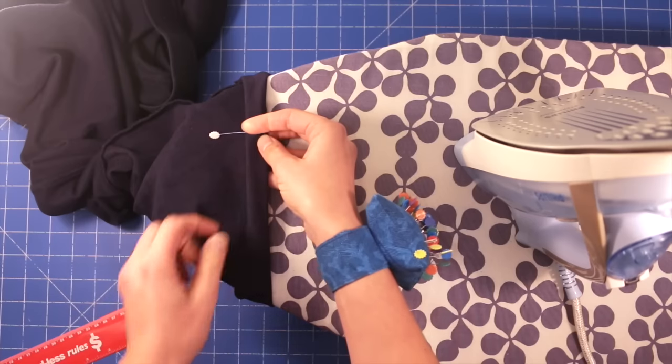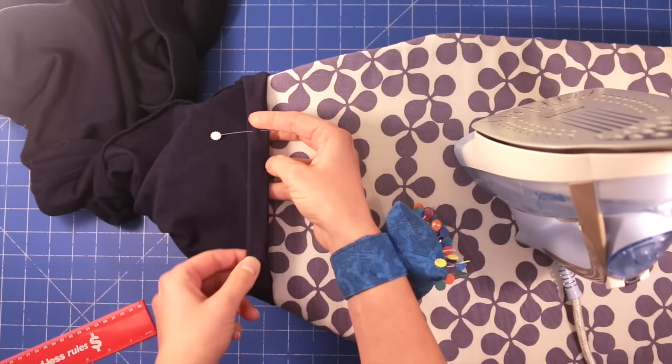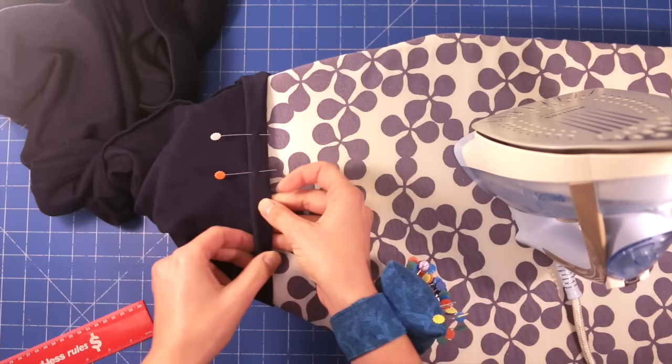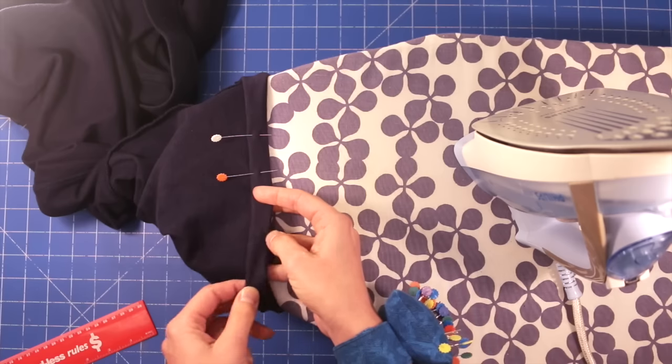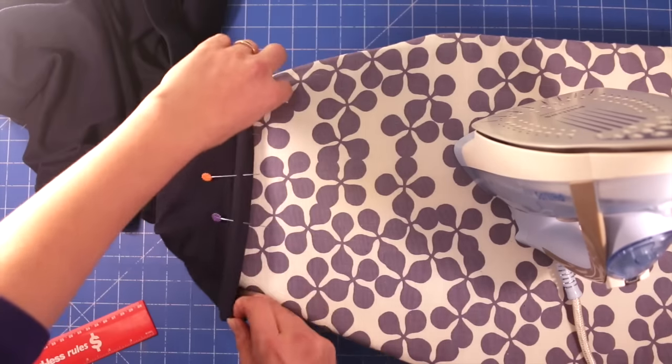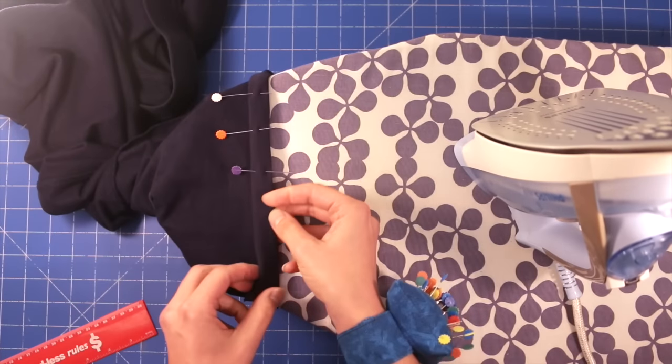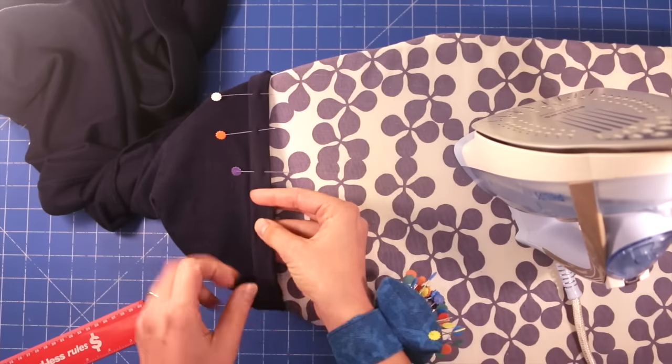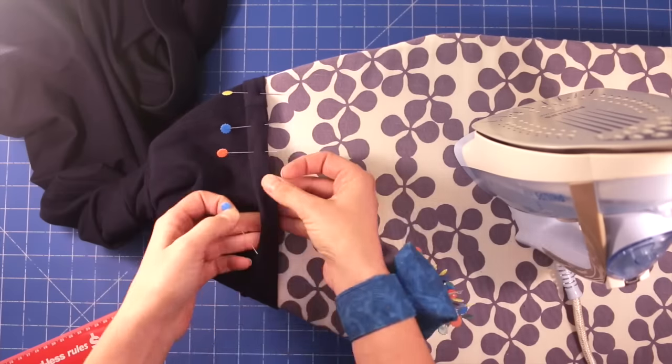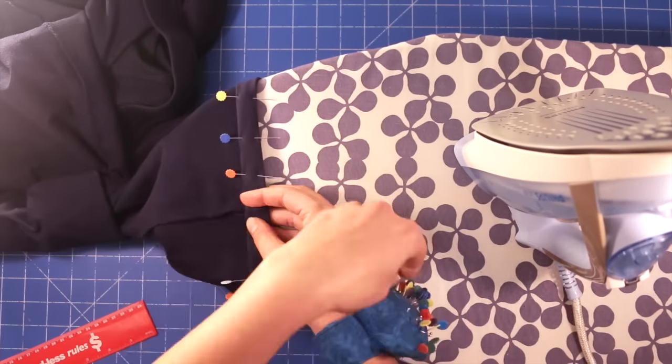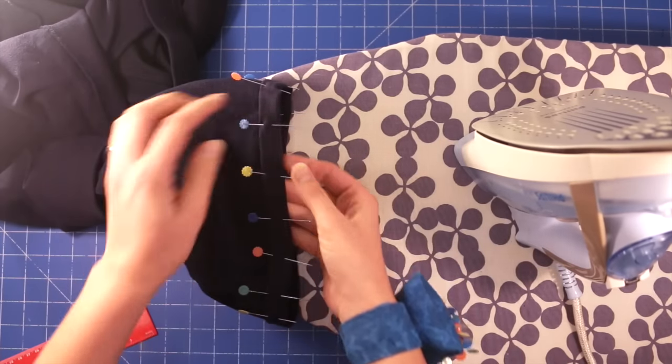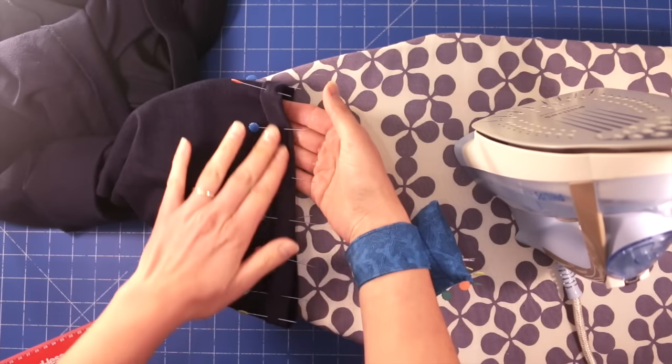Now, if you're using a stretchy type knit fabric like I am, it might pay to use a few more pins. And I'm just going to guesstimate now. I can kind of see the width that it is. So, now my hem is all prepped and ready to be taken over to the sewing machine and sewn.